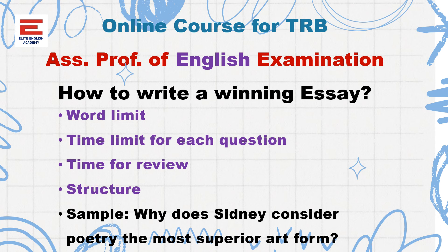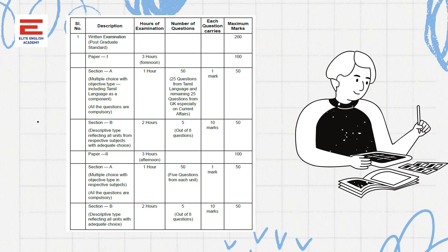Greetings from Elite English Academy. This video will be very useful for aspirants preparing for Assistant Professor of English examinations conducted by TRB. In this video, we will discuss how to write an effective essay — the important aspects, word limit, time allocation for each question, whether time should be allowed for review, the structure of the essay, and finally a sample essay from criticism.